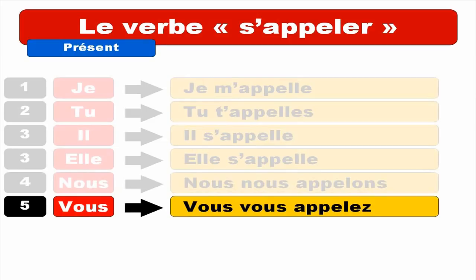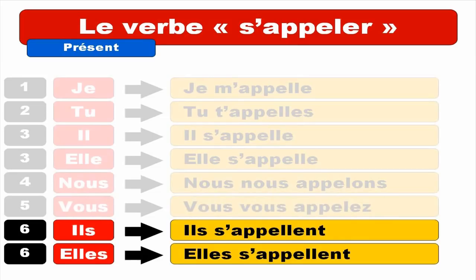And finally, ILS plural masculine — you get ILS S'APPELLENT. That's the same concept: usually you should have SE, but starting with a vowel, the I disappears and you get ILS S'APPELLENT. Repeat. ILS S'APPELLENT. And ELLES — ELLES S'APPELLENT. Repeat. ELLES S'APPELLENT. If you notice, the plural form ILS/ELLES and the singular IL/ELLE actually have the same pronunciation — IL S'APPELLE, ELLE S'APPELLE.